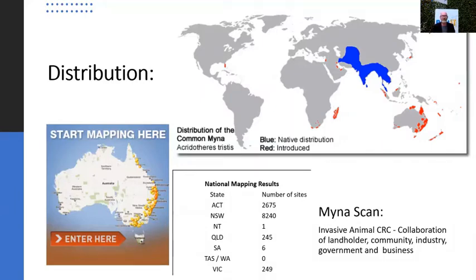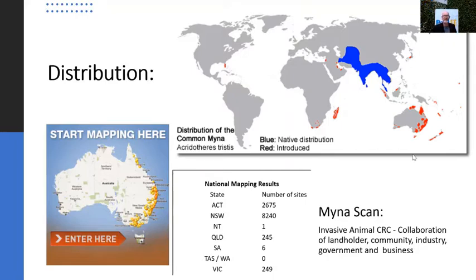From a distribution perspective, this is an Asian species - hence the name Indian myna - from throughout India, down to Thailand, up to Pakistan. But it has been moved around the world to places like Florida, parts of the UAE and Africa, the Maldives, Mauritius, Canary Islands, Australia, New Zealand and the South Pacific. If you need an updated range, there's an invasive animal group CRC that has collaborated with different agencies to create MinerScan - you can Google MinerScan to see the impacts and mapping sites where trapping or sightings have been recorded. A useful resource.